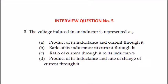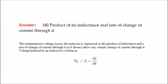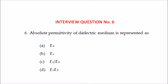Fifth question: the voltage induced in an inductor is represented as — product of its inductance and current through it, ratio of its inductance to current through it, ratio of current through it to its inductance, or product of its inductance and rate of change of current through it? The answer is the product of its inductance and the rate of change of current through it. Because the instantaneous voltage across the inductor is expressed as the product of inductance and rate of change of current through it, as it does not allow any sudden change of current through it.